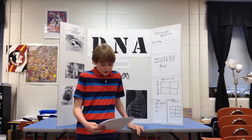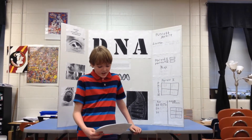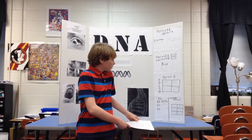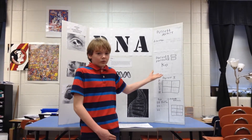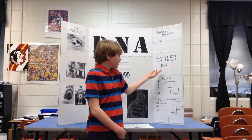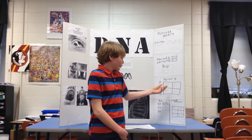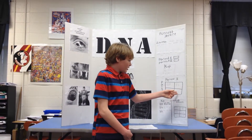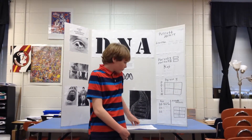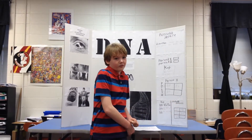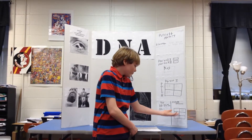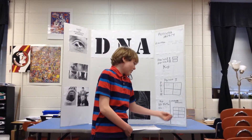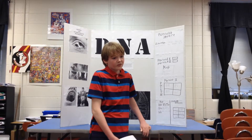The Punnett square shows possible outcomes for genetic traits. I've provided an example. Here, as you can see, you have two brown-eyed parents with the blue recessive gene. That recessive gene can make a blue-eyed child, but you have a 25% chance of having a blue-eyed child, 75% of having a brown-eyed child, and 50% chance of having a brown-eyed child with the blue recessive gene.